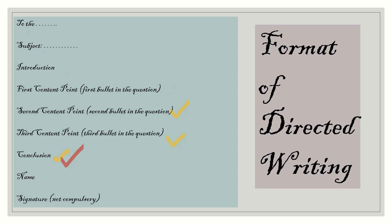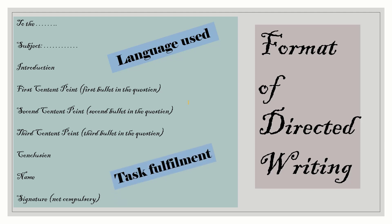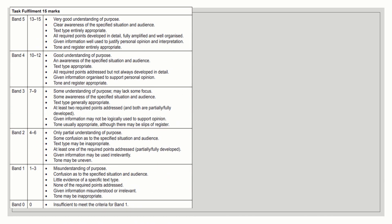The most important thing after learning the format is to look at language use, because we will be awarded 15 marks for this. Let's see the task fulfillment marks. Task fulfillment marks are 15 in total, divided into bands. The highest band is Band 5, where you get 13 to 15 marks. Band 4 gives 10 to 12 marks. These are the criteria for scoring these marks — this is the Cambridge mark scheme based on which marks are given.